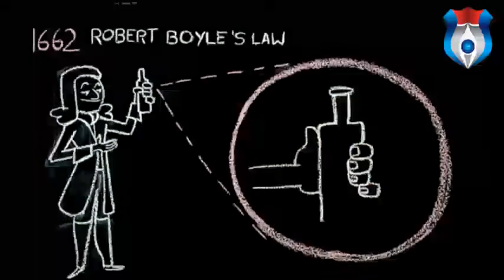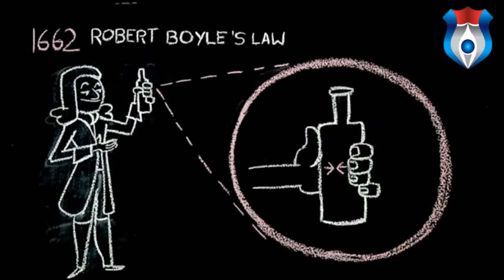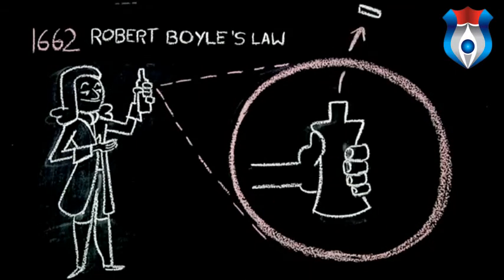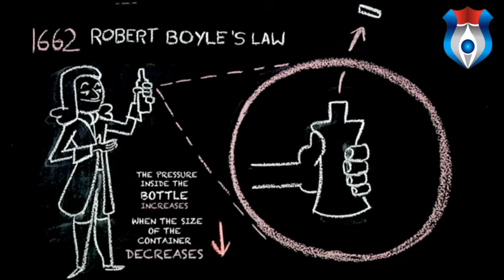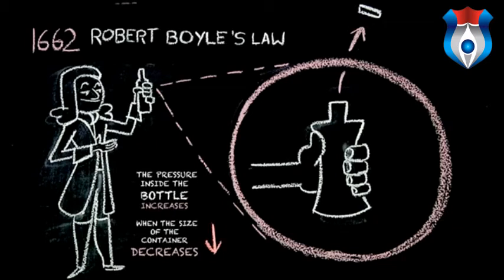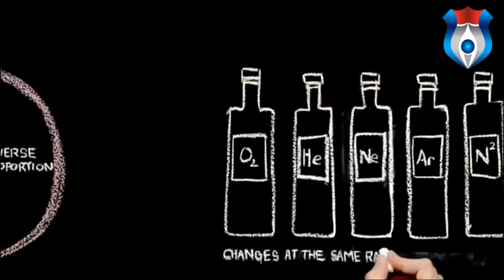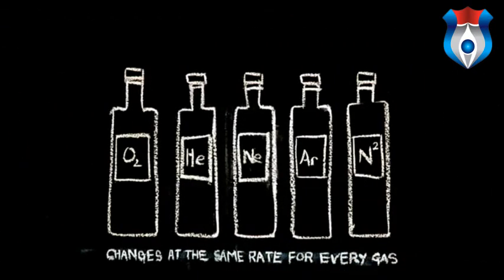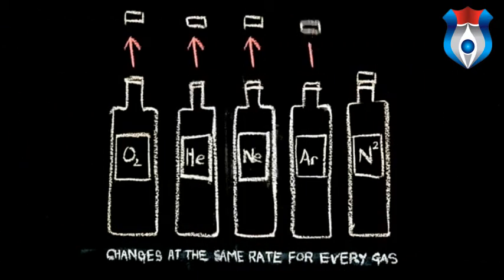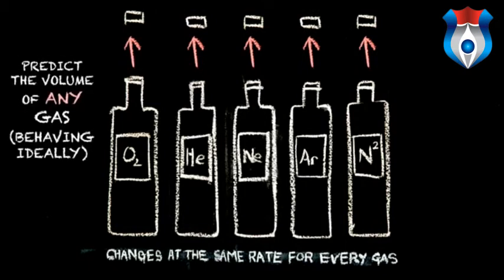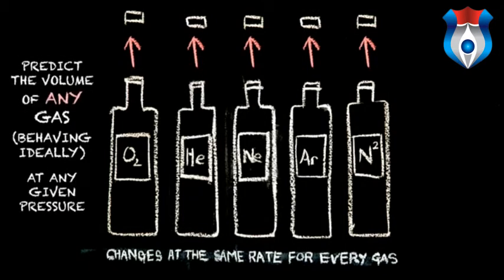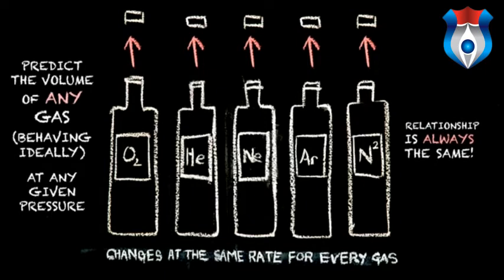Take an empty bottle and put the cap on it, closing that container. Now squeeze your bottle — what happens? The pressure inside the bottle increases when the size of the container decreases. You can only crush that container so much until the gases inside push back on your hand. This is called an inverse proportion and it changes at the same rate for every gas. Boyle's law allows chemists to predict the volume of any gas at any given pressure because the relationship is always the same.